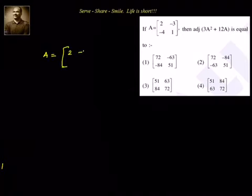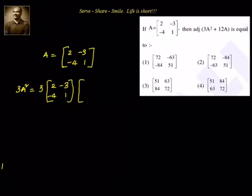A equal to [[2, -3], [-4, 1]]. First we will find out 3A². 3A² equal to 3 into A [[2, -3], [-4, 1]] multiply that with again [[2, -3], [-4, 1]]. That is equal to 3 into, it is a 2 by 2 matrix multiplying with 2 by 2 matrix, so we will have again a 2 by 2 matrix only.